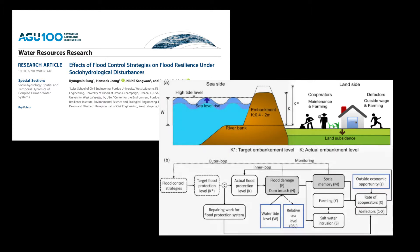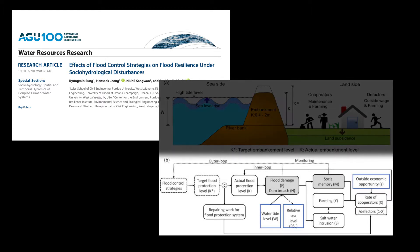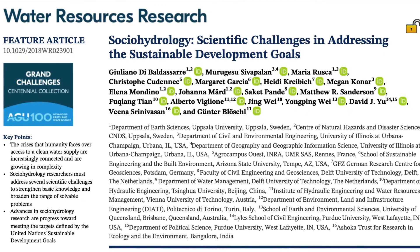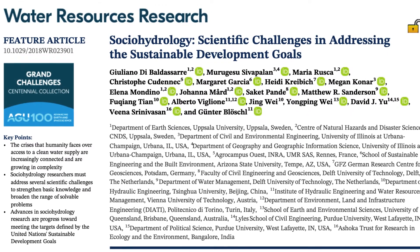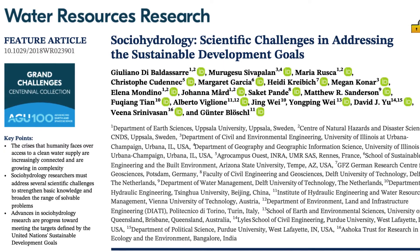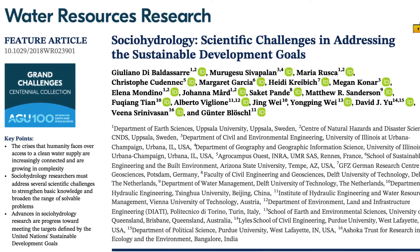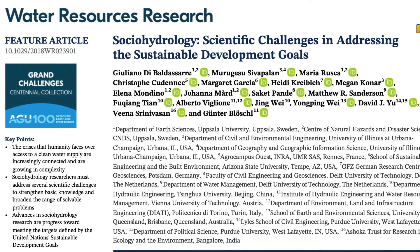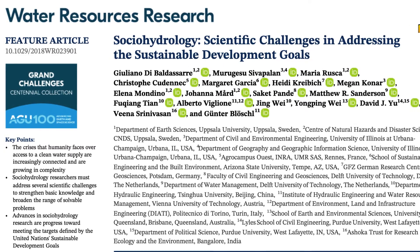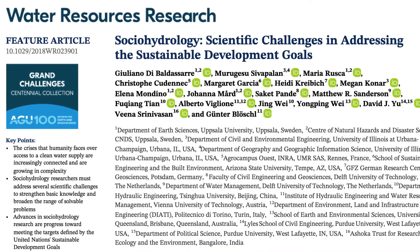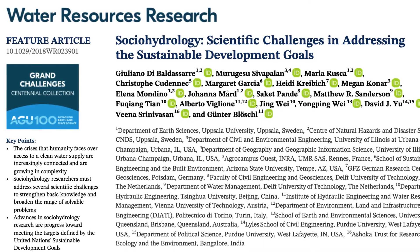Fortunately today, scholars are developing more sophisticated socio-hydrological models that move in this direction — namely to bring in behavior and decisions better. In a recent paper by Giuliano Di Baldassara and colleagues, they describe the evolution of socio-hydrological modeling as well as its relevance to the Sustainable Development Goals.